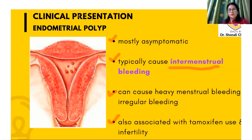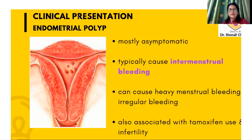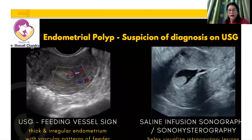Whenever a woman comes with a complaint of abnormal heavy menses or any kind of abnormal bleeding like intermenstrual bleeding, the first thing we do is rule out any other structural cause. Especially in reproductive age group women, we go for an ultrasound first to rule out a number of structural causes — one of them is endometrial polyps, the other is fibroids uterus, leiomyomas, adenomyosis, or endometrial hyperplasia. These structural causes need to be identified, therefore we go for an ultrasound.